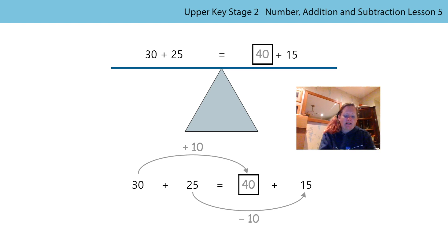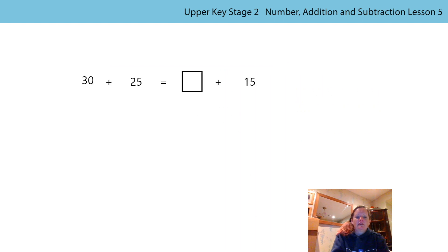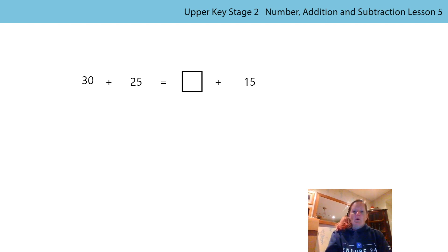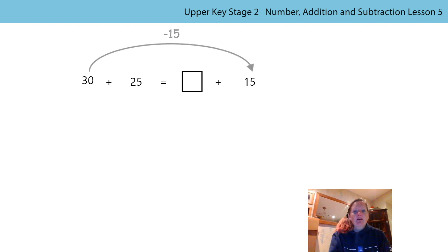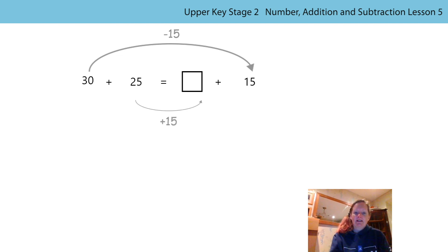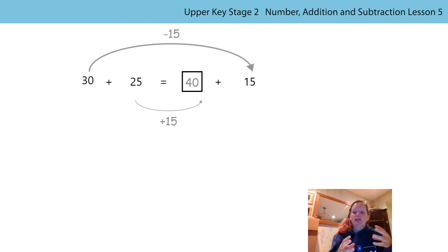Should we have a look at the other addend? Would it have mattered if instead of redistributing from the 25, we'd redistributed from the 30? What do you notice about 30 and 15? 15 is half of 30! We notice that 15 is 15 less than 30. So if I have subtracted 15 from one addend, I need to add 15 to the other addend. 25 add 15 is 40. So we redistributed from the other addend and got the same answer. It doesn't matter which addend you choose to redistribute from, as long as you're redistributing the correct amount.